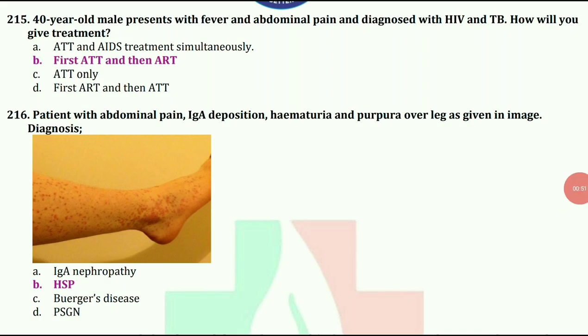40-year-old male presents with fever and abdominal pain and diagnosed with HIV and TB. How will you give treatment? First, we will give anti-tuberculosis treatment and then ART.